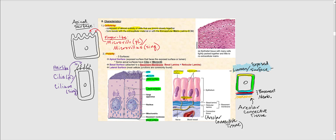The next characteristic is polarity. Epithelial cells have three surfaces. The apical surface is the exposed surface — the part of the plasma membrane facing the exposed surface or lumen, highlighted in yellow. The basal surface is the surface of the epithelial cell attached to the basement membrane, shaded in blue.